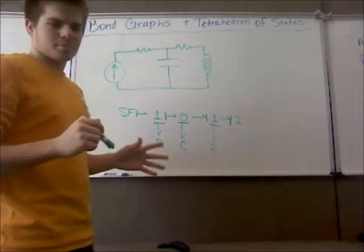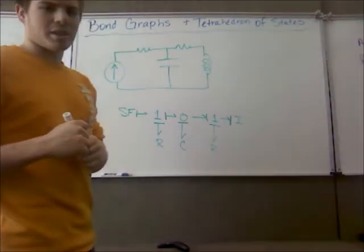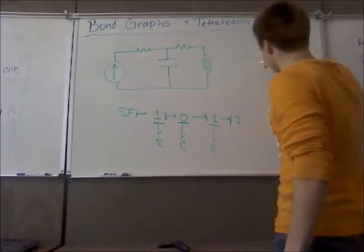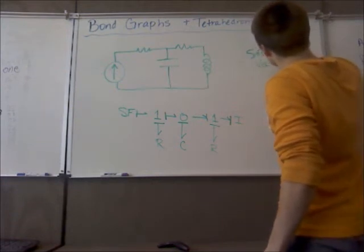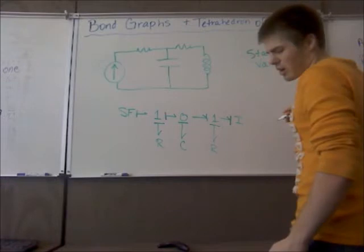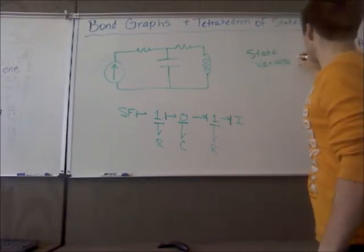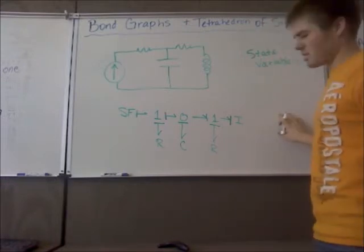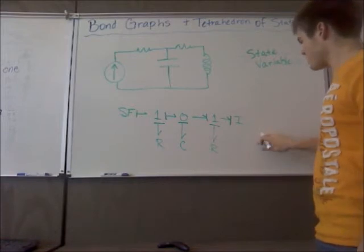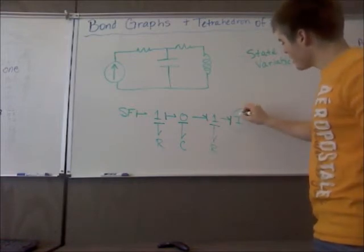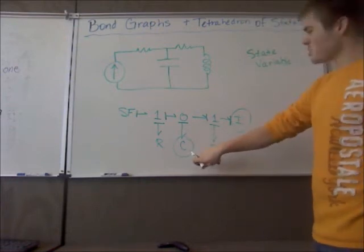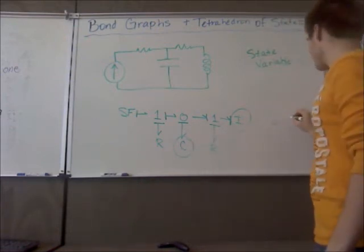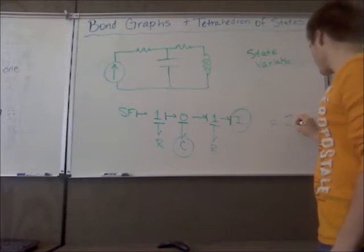And so I've said state variable a couple of times but I haven't really told you what it is. A state variable are the variables in your equations that define your system. So for this one we would have this I and the C, your inductor and your capacitor are your two state variables for this system. So this bond graph has two state variables.